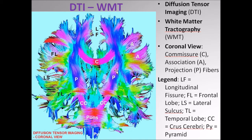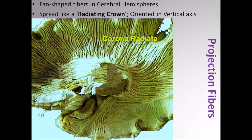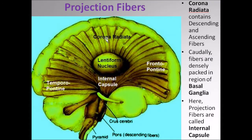The thrust of our discussion today will be on the projection fibers. Let's take a look at another example. This is a dissection of a brain, and we can see this radiating fan-shaped structure here. This is a projection fiber which has been given a specific name called the corona radiata, radiating like a crown. Another example of a projection fiber shows a more diagrammatic representation where the fibers are radiating like a crown — that's why it's called the corona radiata.